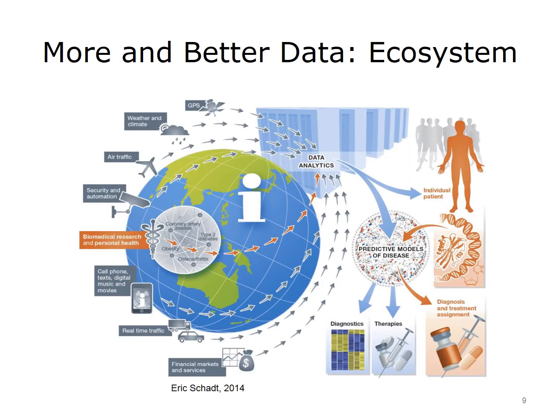You can't deliver risk scores or models without data. Data has historically come from a few sources, but the data ecosystem, shown here in an image by Eric Shadd, is growing. Global positioning systems, weather, traffic, and other sources will be combined with increasing amounts of biomedical and personal health data to produce better predictive models of disease for diagnosis, therapy selection, and treatment.